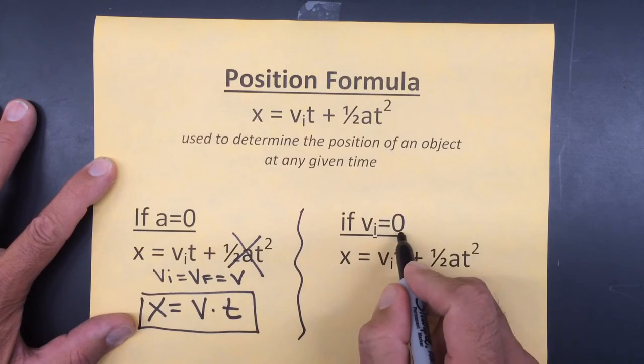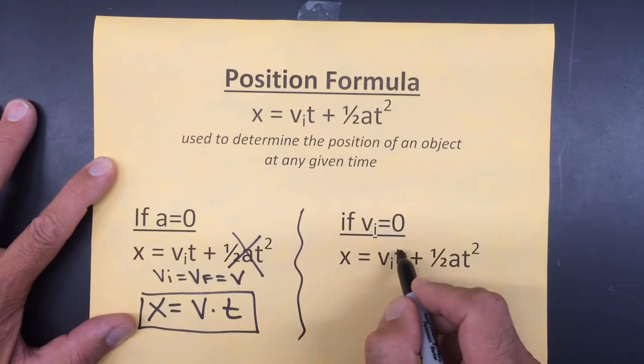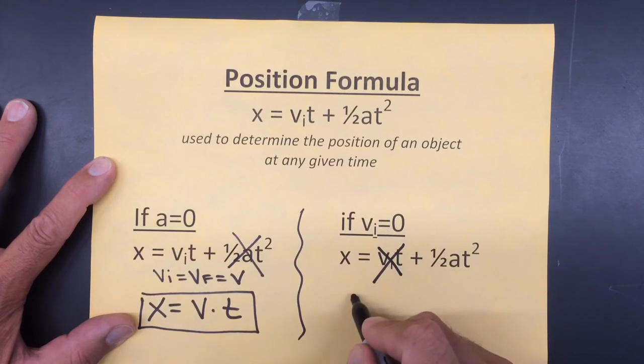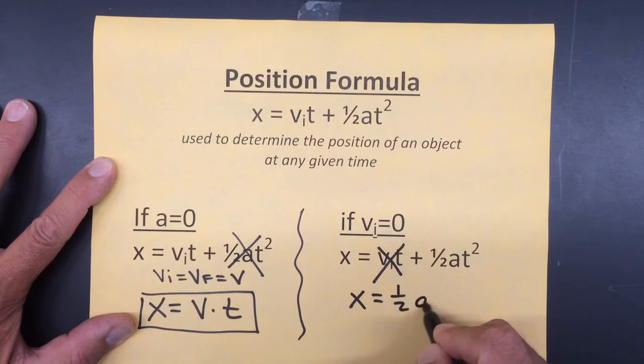Now, if the initial speed of the object is equal to zero, that drops out of the equation, and the position is then dependent upon the acceleration of the object and the time of travel.